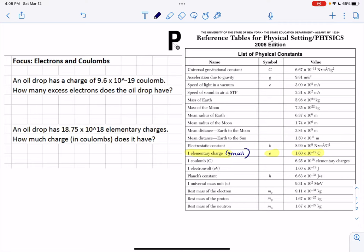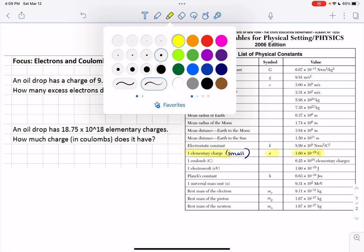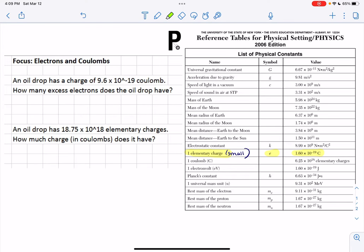However, later we're going to learn more about electricity and when electricity is flowing through like a copper wire, for instance. And in those instances, we're going to be talking about a lot of elementary charges, specifically electrons moving through something. So in that case, we aren't going to be measuring in elementary charges. We're going to be measuring in coulombs.